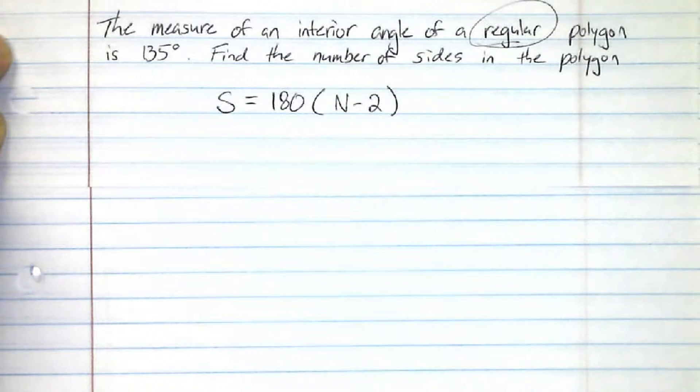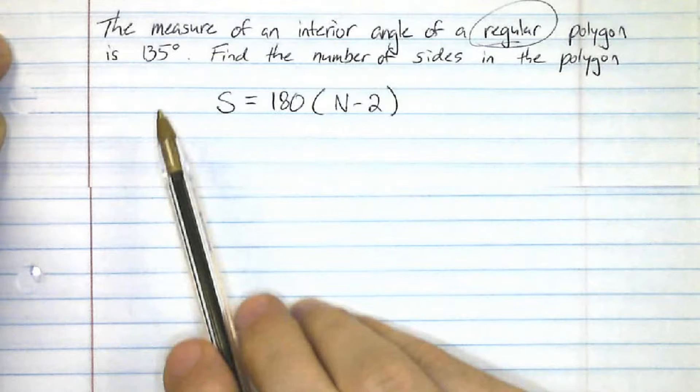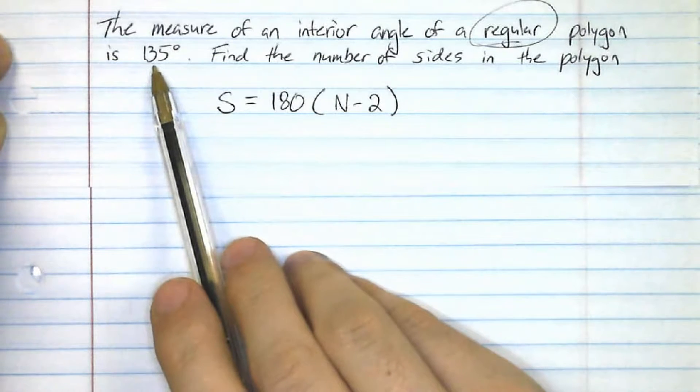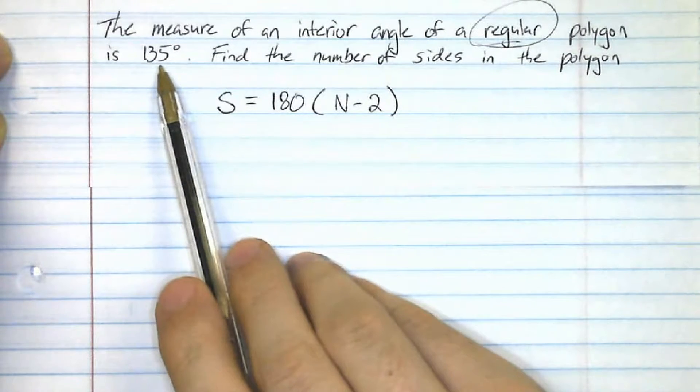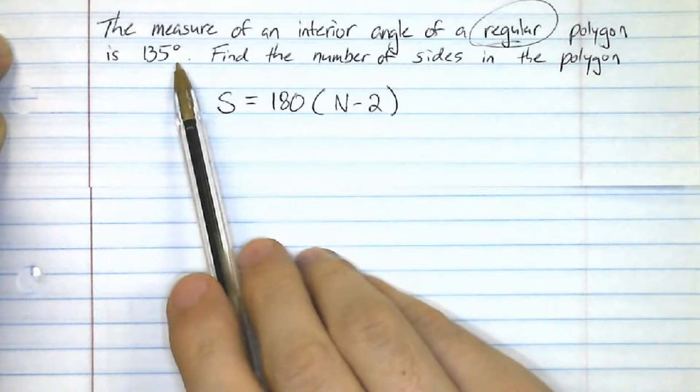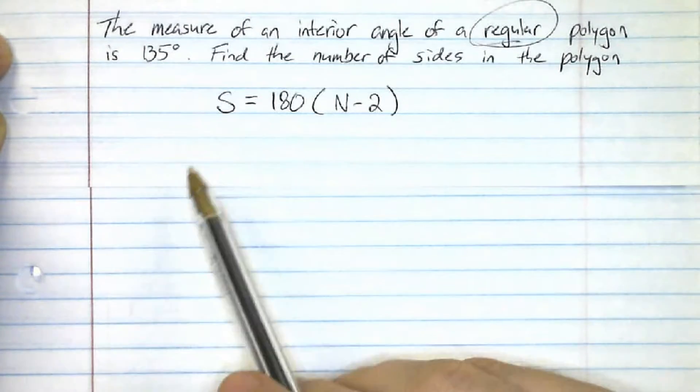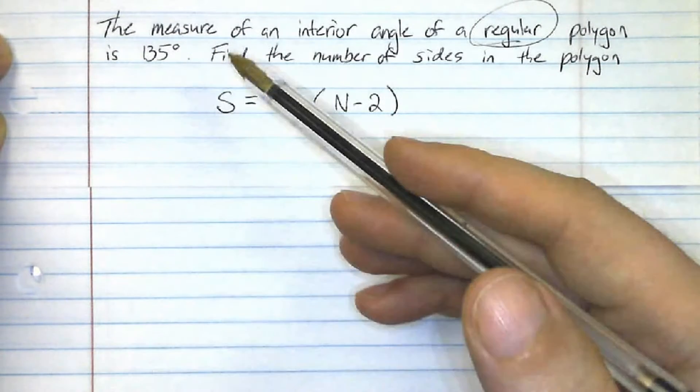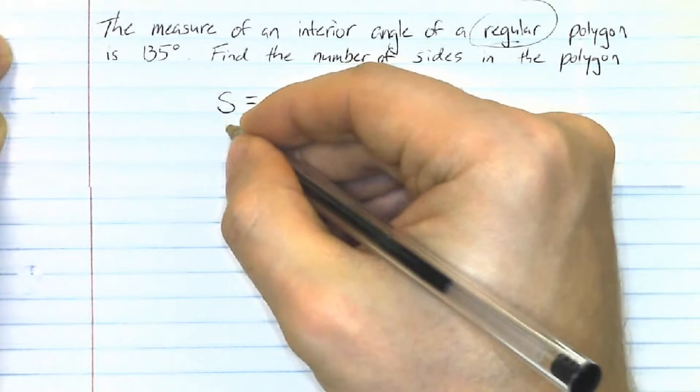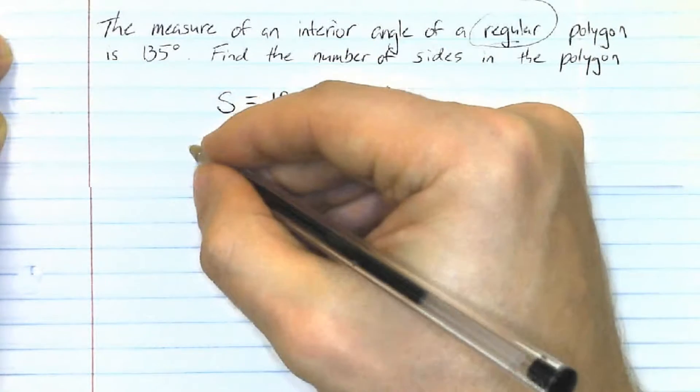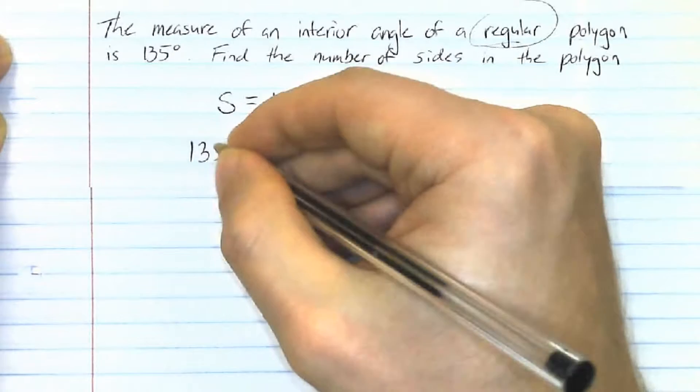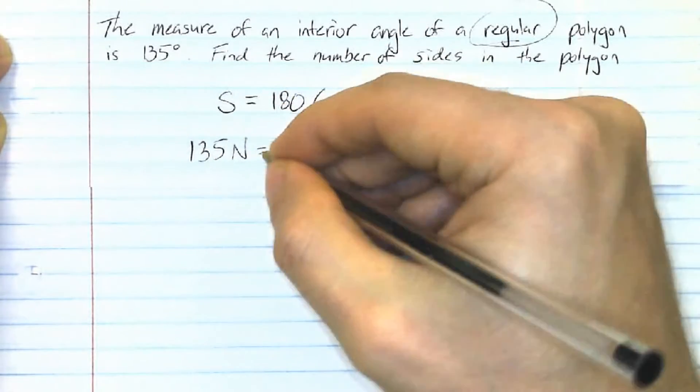So we could essentially say that if each one of these is 135 degrees, 135 times the number of sides, that would equal the sum of all the angles. We just don't know what that number is. So what's going to happen is I'm going to substitute for S here. I'm actually going to substitute 135 times the number of sides.